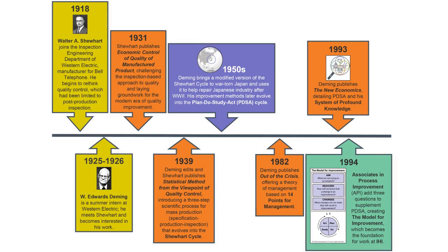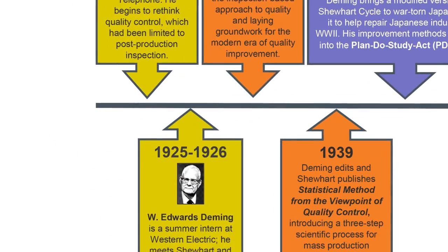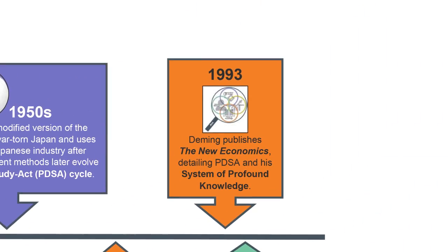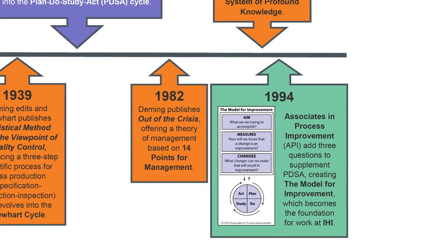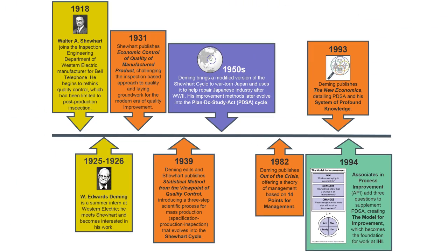The science of improvement began with a new way to think about variation that Walter Shewhart developed in the 1920s. Every bit of the science that Deming codified under what he called profound knowledge — what we call the science of improvement today — began with Shewhart's idea of common and special causes. A lot of people working in improvement who are using tools and methods still haven't studied or know that theory.